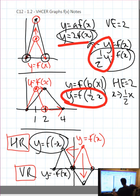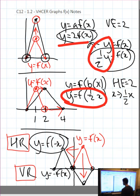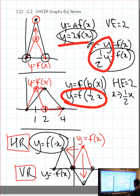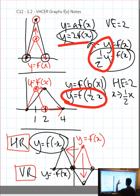We're now going to move on to combining sections 1.1 and 1.2, whereby we do translations and transformations altogether in the same order: points, then functions, then y equals, then graphs.